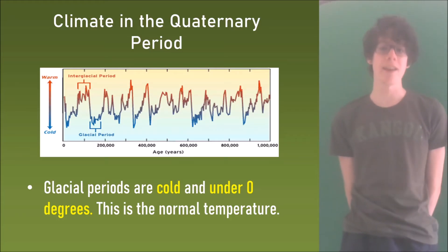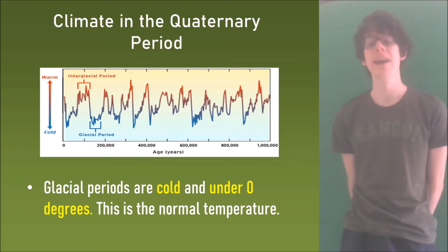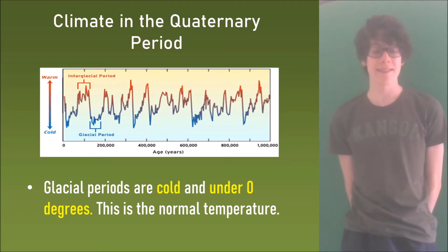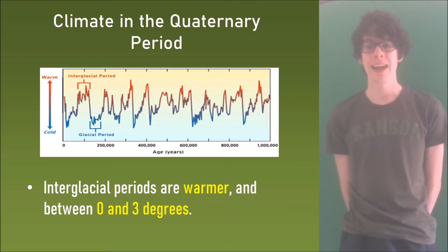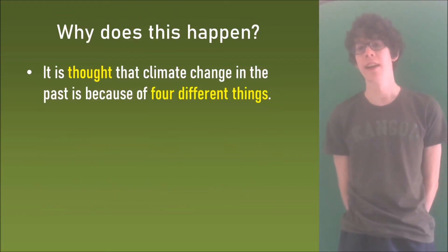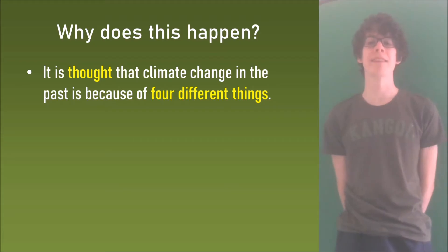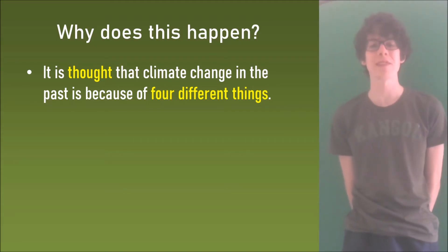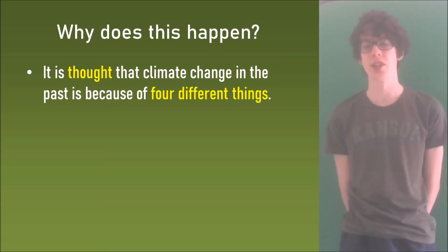Glacial periods are cold and under zero degrees — this is the normal average temperature. Interglacial periods are warmer, between zero and three degrees. It is thought that climate change in the past is because of four different factors.